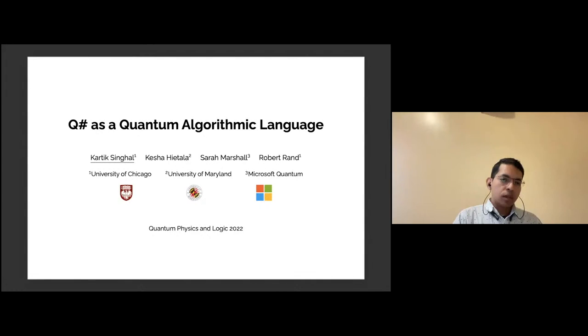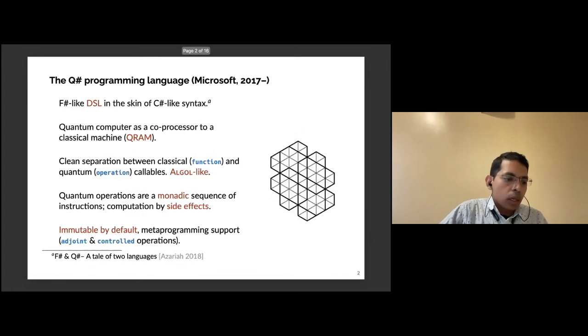Everyone, today I would like to present our work on formalizing the QSharp programming language, and I hope to convince you that QSharp is an Algol-like language as well. This is joint work with Kesha Haitala from University of Maryland, Sarah Marshall from Microsoft Quantum, and Robert Rand from University of Chicago.